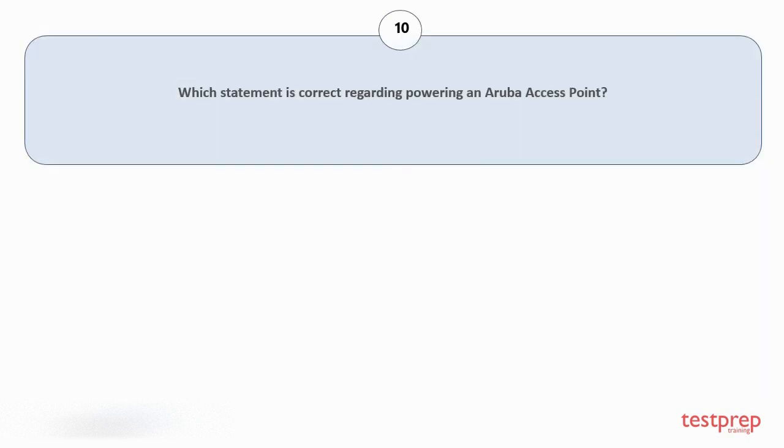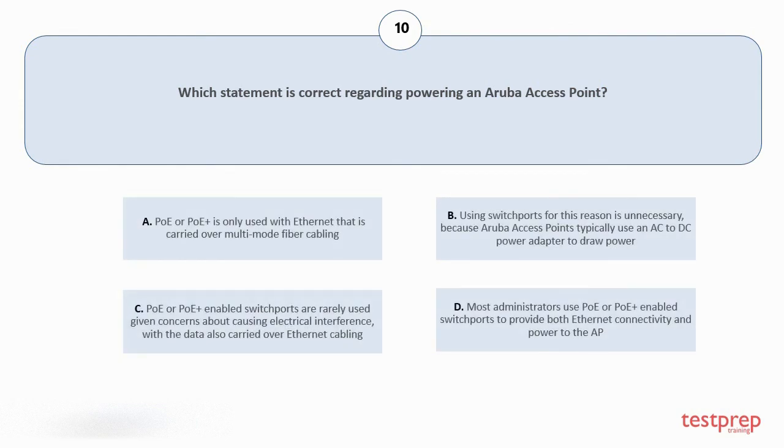Question number 10, Which statement is correct regarding powering an Aruba access point? Your options are: PoE or PoE plus is only used with ethernet that is carried over multimode fiber cabling; Using switch ports for this reason is unnecessary because Aruba access points typically use an AC to DC power adapter to draw power; PoE or PoE plus enabled switch ports are rarely used given concerns about causing electrical interference with the data also carried over ethernet cabling; Most administrators use PoE or PoE plus enabled switch ports to provide both ethernet connectivity and power to the AP. The correct answer is option d.